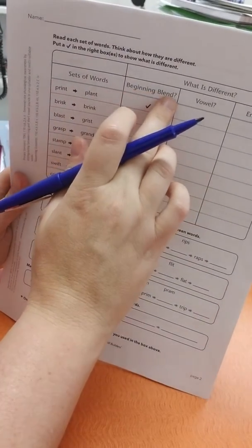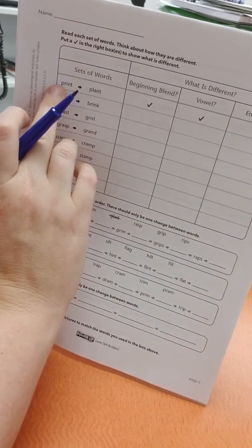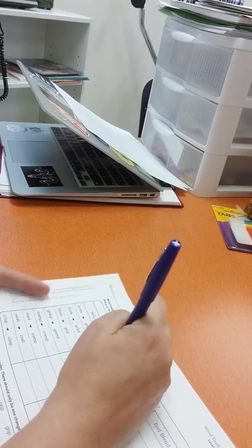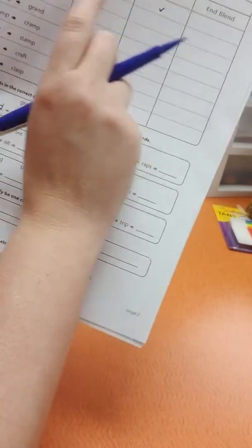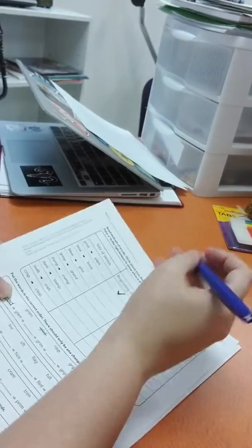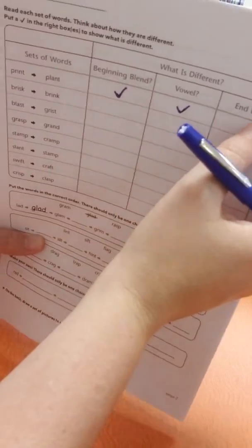So is the beginning blend different? P-r versus p-l. So those are different, so they put a check, right? Is the vowel different? Print has the vowel I and plant has the vowel A. So those are different. So they put a check and then it wants you to see if the end blend is different.